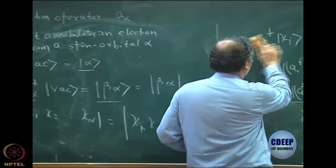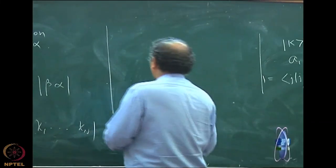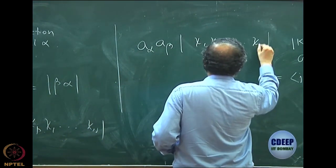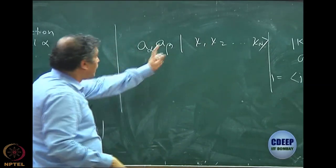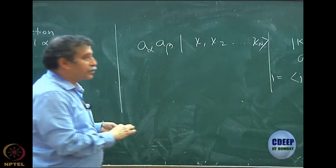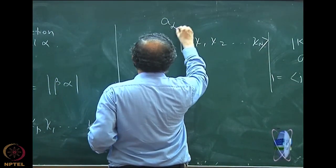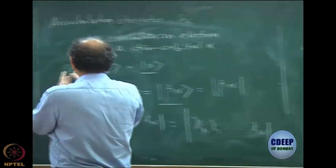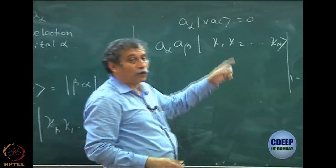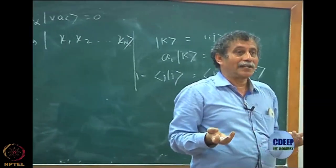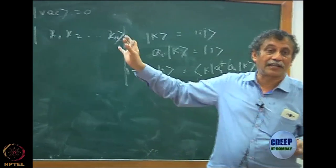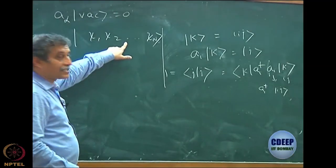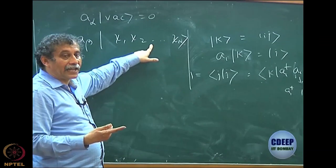Now let us look at a_α a_β acting on any state |χ₁, χ₂, ...〉. One important property of the annihilation operator is that a_α acting on the vacuum gives zero — because you cannot annihilate unless it exists. This is called the killer condition. So a_β will only act if beta exists in the determinant.